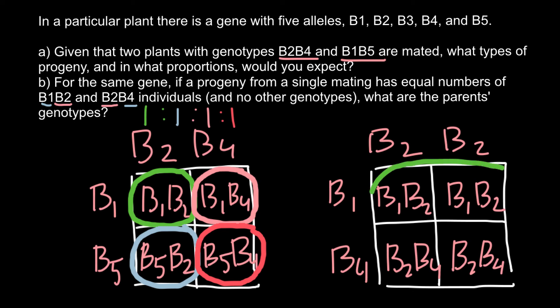As you see, we have two genotypes in the progeny. The first one would be B1B2, 50 percent. The second genotype would be B2B4, also 50 percent. So genotype of one parent is B2B2, and genotype of the second parent would be B1B4. This is the answer for the second question.